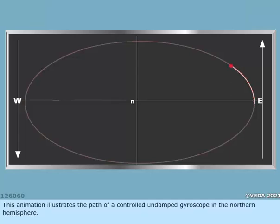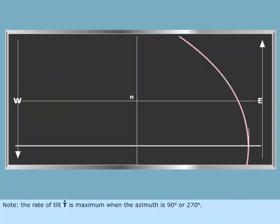This animation illustrates the path of a controlled undampened gyroscope in the northern hemisphere. The rate of tilt, T, is maximum when the azimuth is 90 degrees or 270 degrees.